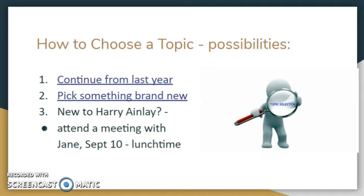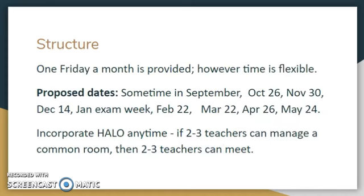Choosing a topic can be tricky. Your possibilities are as follows: you can continue from last year — the first link will give you a document to support you in developing your topic — or you can pick something brand new and the second link will take you to a document that outlines action research in detail. If you are new to Harry Ainley, please come to a meeting at lunchtime on September 10th in room 147 to help support you in developing a topic. The structure for action research is to meet once a month with your group, on Fridays, though that time is flexible. The proposed dates start sometime in September and those Fridays for the rest of the year are set aside for action research.